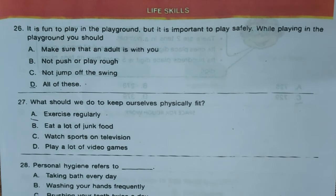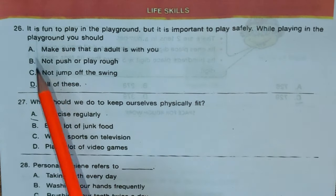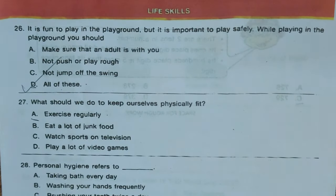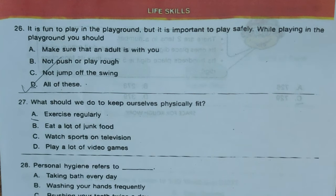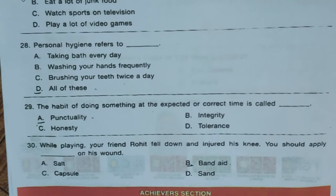Now moving to the Life Skills section. Question 26: It is fun to play in the playground, but it is important to play safely. While playing in the playground, you should: A) make sure that an adult is with you, B) not push or play rough, C) not jump off the swing, D) all of these. Correct answer is D, all of these. Question 27: What should we do to keep ourselves physically fit? Options: A) exercise regularly, B) eat a lot of junk food, C) watch sports on television, D) play a lot of video games. Correct answer is A, exercise regularly.